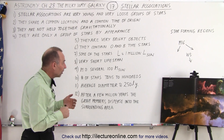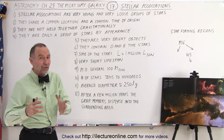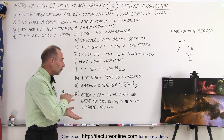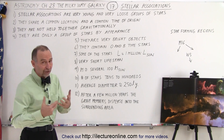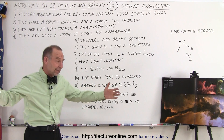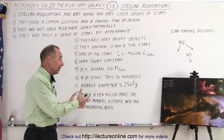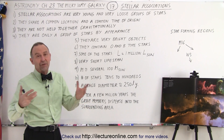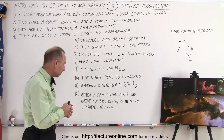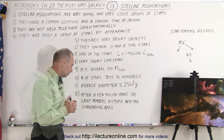The mass is typically several hundred times the mass of the sun. So even if you only have a dozen or 50 stars, on average the mass of those stars is larger than the mass of the sun. The number of stars within one of those associations typically goes from tens to hundreds. The average diameter is 250 light years — as large as the largest globular cluster that has over 10 million stars in it. So in the same volume, you only have a few dozen to 100 stars, and therefore the gravitational attraction simply isn't there. After a few million years, the group members just disperse into the surrounding area.